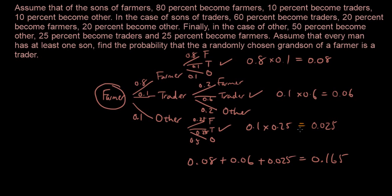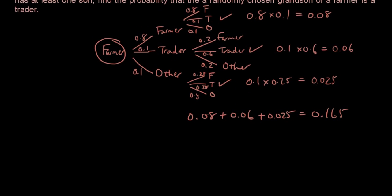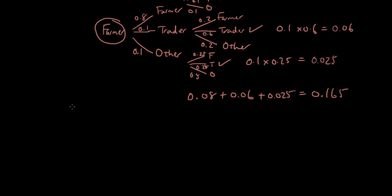This tree diagram approach is manageable when we only have three options and two stages. But what if I rephrased the question with 10 professions and 10 generations? It would be far too big to do with a tree diagram. This is where Markov chains come in — we construct what we call a transition matrix.